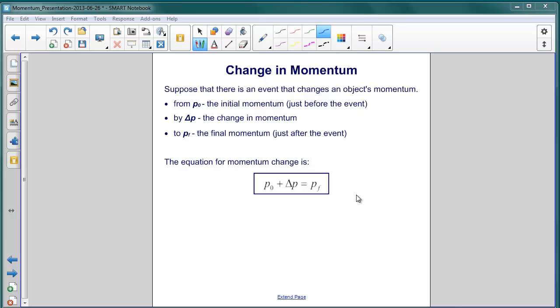Something will occur that changes its momentum by an amount delta P, and the resulting momentum is Pf, just after the event.